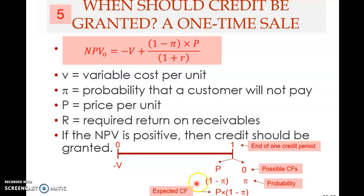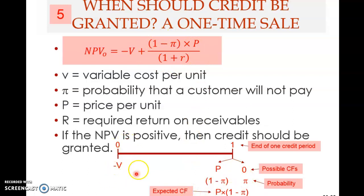So you need to take the present value of this — you need to discount it. Not this one; the (1 − π) × P term is already here. Now you discount this to present value by dividing by (1 + R), the discount rate for one credit period. This becomes the present value at time 0, and then you can add the two together.